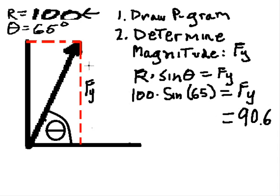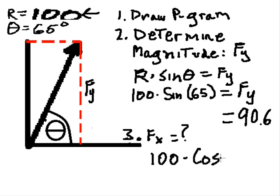Now I have to determine the magnitude of Fx, pardon me. Fx equals what? Well, that's going to be 100, the resultant, times the cosine of theta, which is 65.